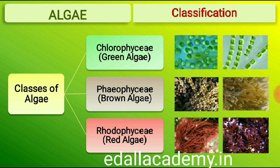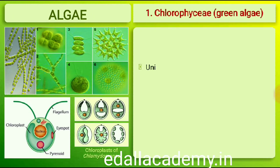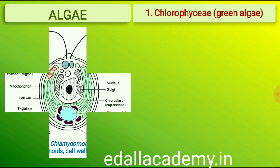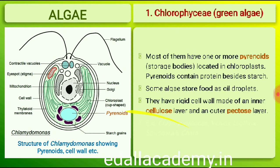The members of Chlorophyceae are commonly called green algae. The plant body may be unicellular, colonial or filamentous. They are usually grass green due to the dominance of pigments chlorophyll-a and chlorophyll-b. The pigments are localized in definite chloroplasts. The chloroplasts may be discoid, plate-like, reticulate, cup-shaped, spiral or ribbon-shaped in different species.